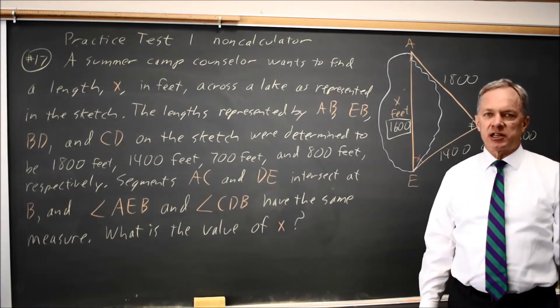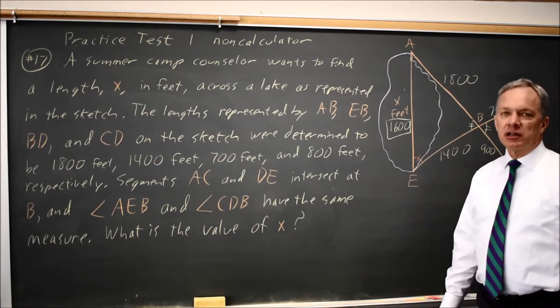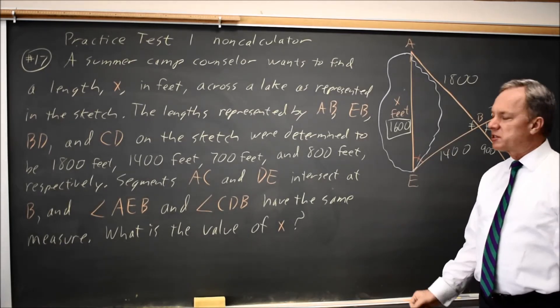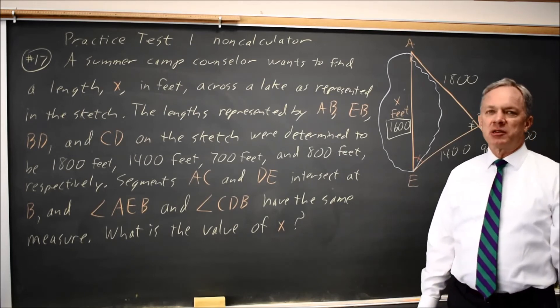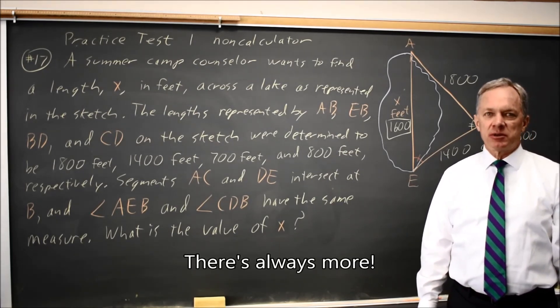The College Board often asks about similar triangles. When you have two angles that are equal between triangles, then the third angle is also equal, and the triangles are similar and in proportion, and the proportions are given by the measurements they've provided. Come back soon for my next math video. With math, there's always more.